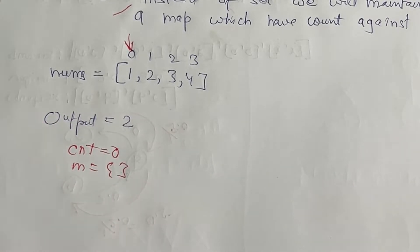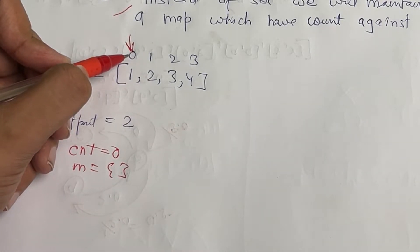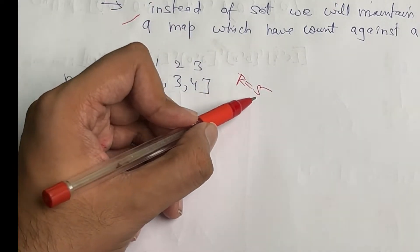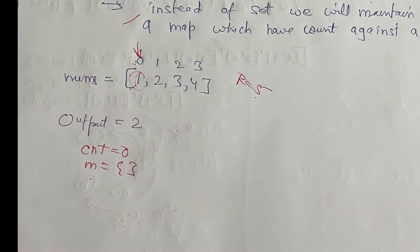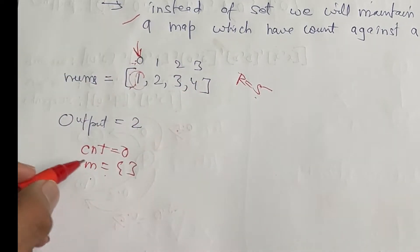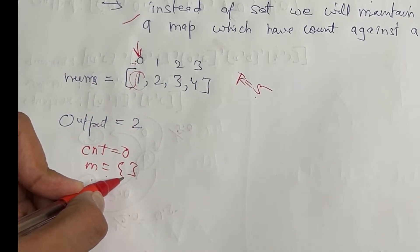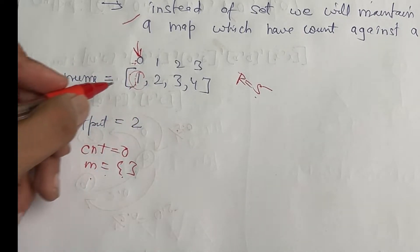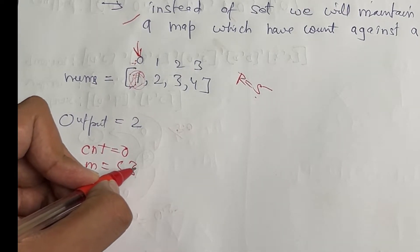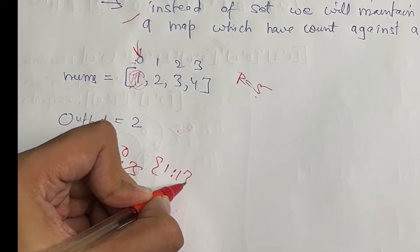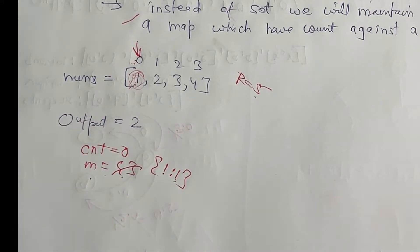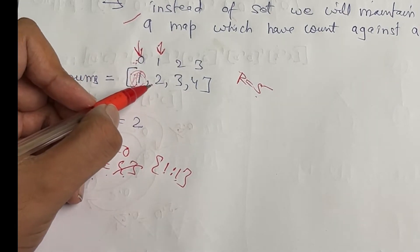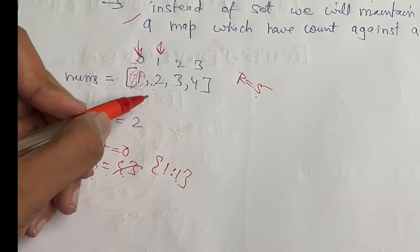We start with an empty map and loop over the array. For each element, we check if k minus that element's value is present in the map. k is five and the first value is one, so we check if four is in the map — it's not, so we store key one with count one. Moving to the next element, two: five minus two is three, which is not present, so we add two to the map.